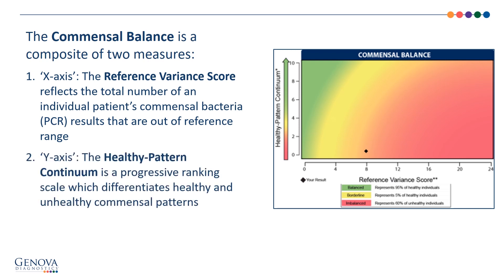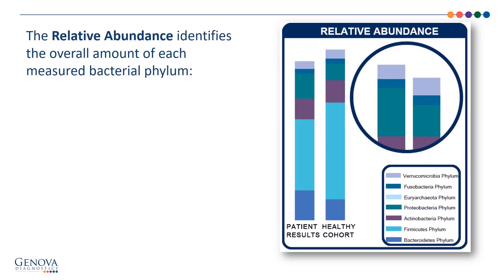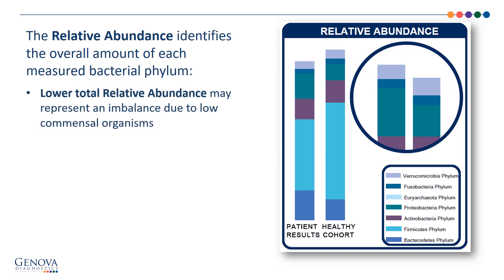The y-axis is the healthy pattern continuum that was derived via an algorithm that differentiates healthy from unhealthy commensal patterns. The goal is to have the patient's result fall within the green, balanced zone. The relative abundance represents the growth of each phylum. The goal is to have your patient's relative abundance appear similar to the healthy cohort. A lower abundance may represent an imbalance due to low commensal organisms and can sometimes be seen after an intervention such as taking antibiotics.